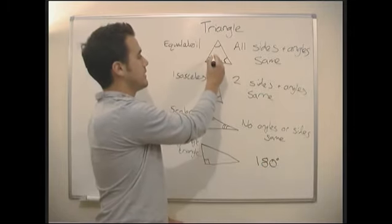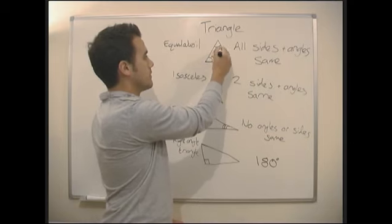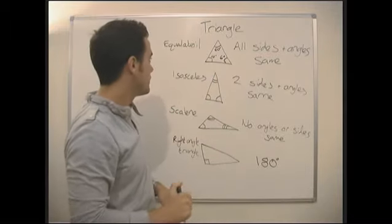So, of all of these, we know straight away that in an equilateral triangle, all the angles must be 60 degrees. Because 180 divided by 3 gives us 60 degrees.